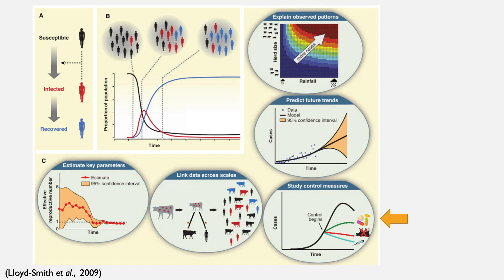These models can help us study control measures that help flatten the curve of disease spread — for example, what happens if we implement social distancing measures. They can also help us explain and observe patterns of what modelers call covariates, which are factors that may help us predict outcomes. In this case, we are looking at climatic variables and group size to explain disease outcomes. Disease models can have very different applications and be used in very different settings.